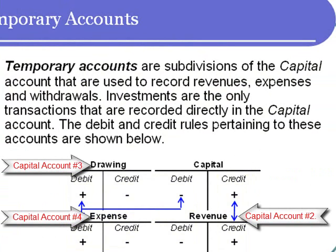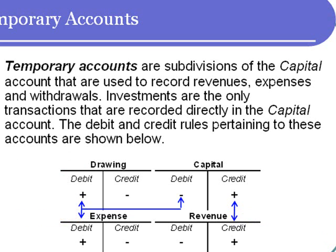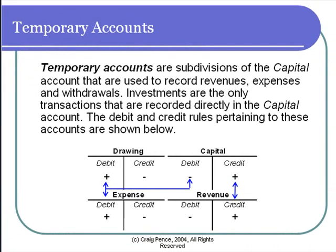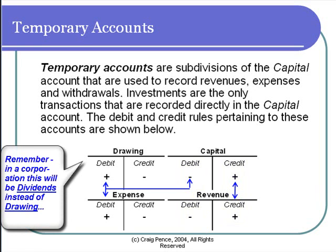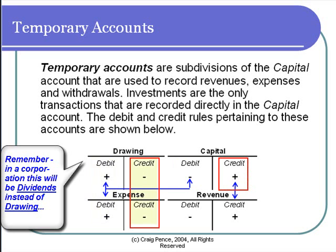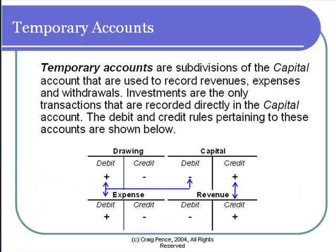Directly under capital, we have the revenue account. Since revenues increase owner equity, revenues represent credits to the capital account. If the revenue account is just a separate little capital account, then increases in revenues are recorded with credits and decreases with debits — it mirrors the capital account. The drawing account and expense account are used for withdrawals and expenses, which all decrease owner equity. Therefore, an increase in withdrawals or expenses is recorded with a debit, and a decrease would be recorded with a credit.